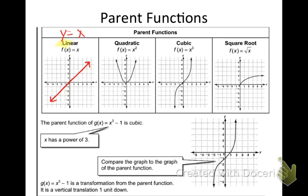Next, I have quadratic. Notice, quadratic is anytime I have an x². Now, what is the name of that quadratic graph? It starts with a P — parabola. Anytime you have an x², that's going to give you what is called a parabola.